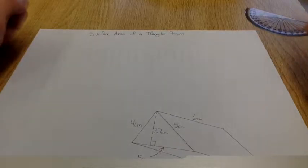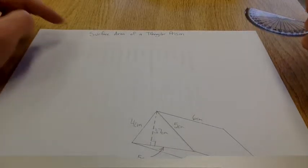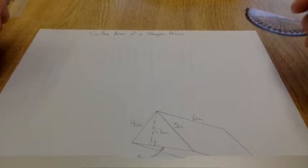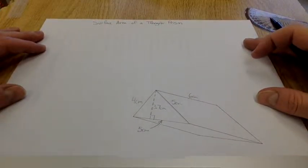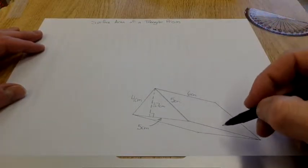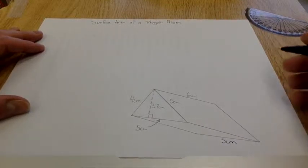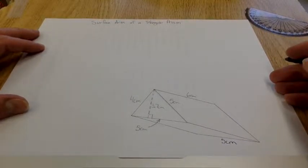Good afternoon. Here we are, video on how to find the surface area of a triangular prism. I have one prepared already. We have this already set up. This is 5 centimeters as well, so this is an irregular triangular prism.